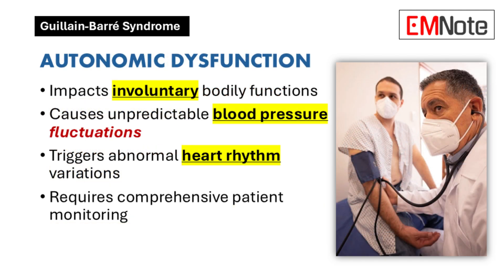Autonomic Dysfunction: Guillain-Barré Syndrome extends beyond motor nerve involvement, critically affecting the autonomic nervous system. Patients may present with complex physiological disruptions, including unpredictable blood pressure fluctuations and cardiac rhythm abnormalities. These autonomic disturbances complicate clinical management and require comprehensive monitoring during hospitalization. Healthcare providers must remain vigilant for these systemic manifestations.